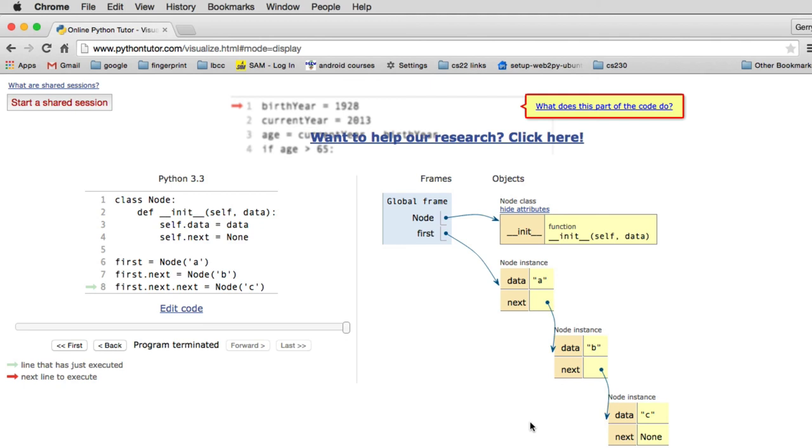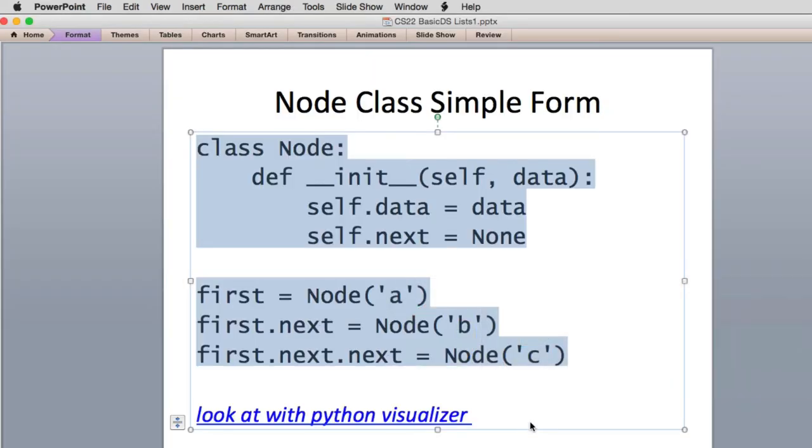Now why this is important is because this is basically a very efficient way to build a list in memory. It's very flexible. You can insert things in the middle, we're going to see. You can delete things from the middle. You can add to either end. And so we're going to examine this whole structure because this is a very important structure in computer science.